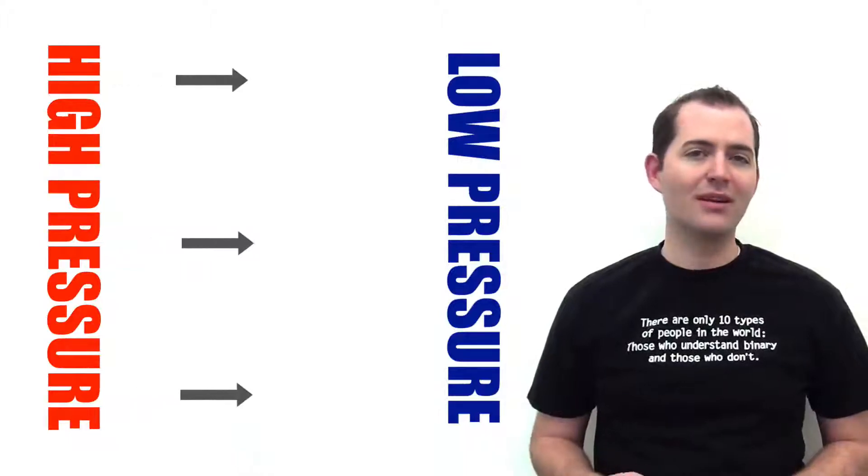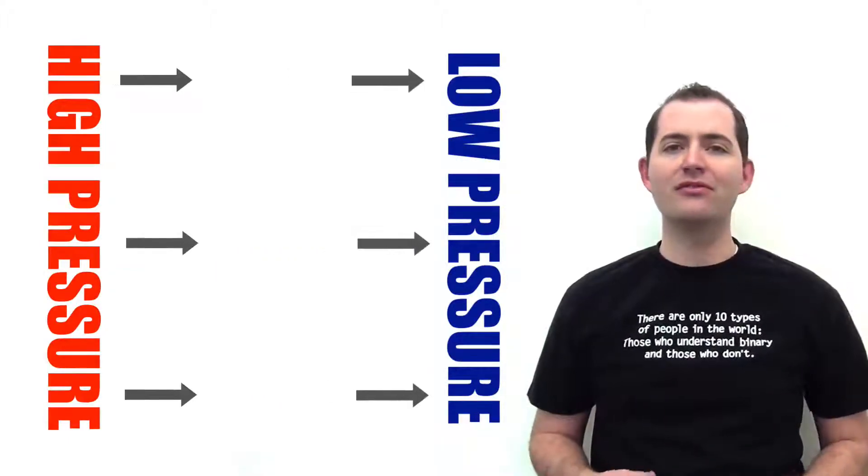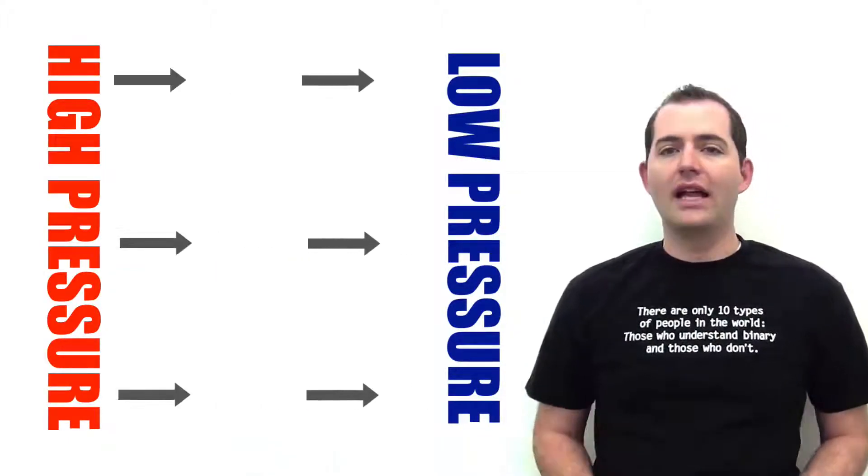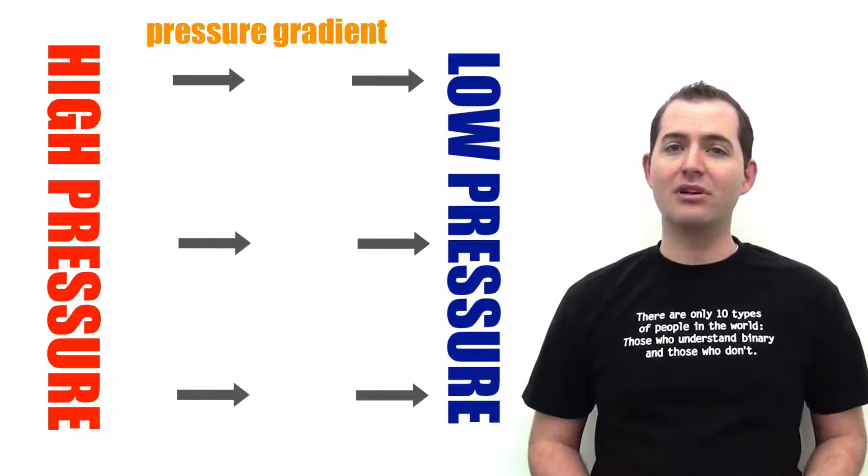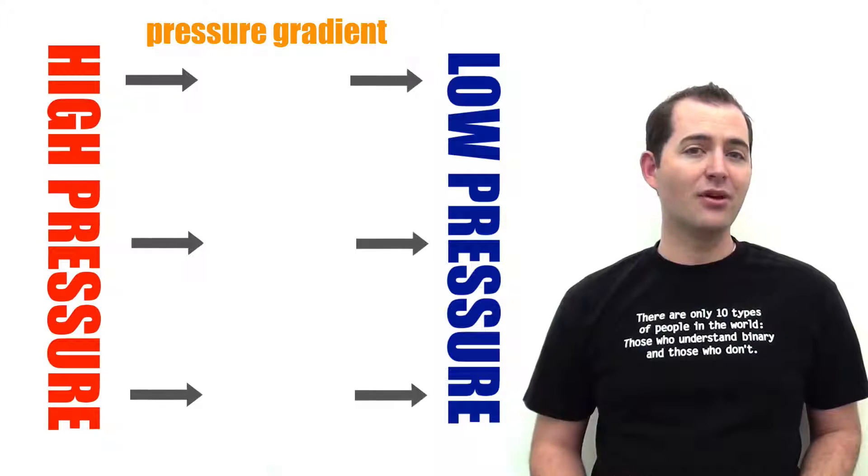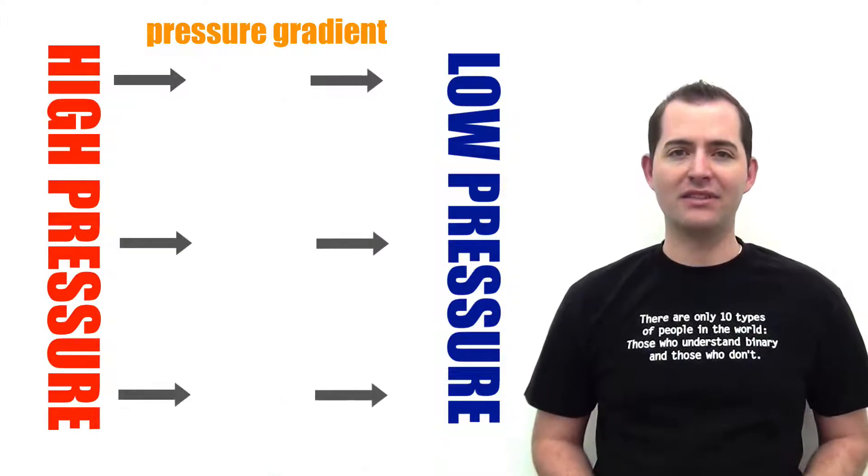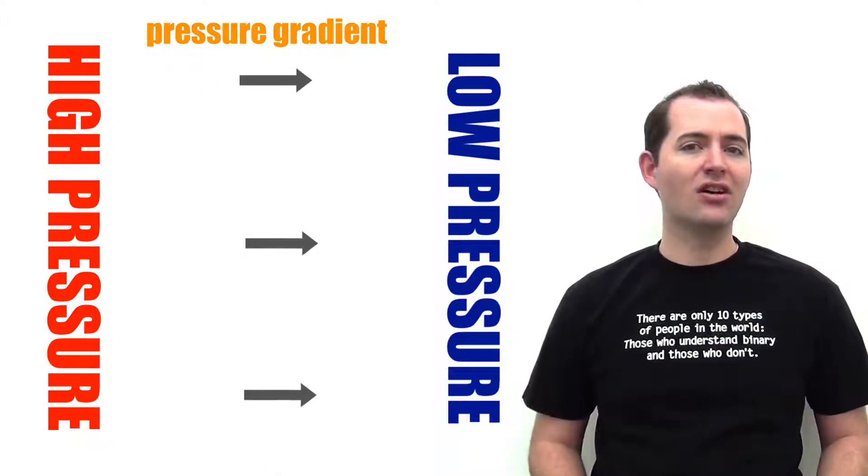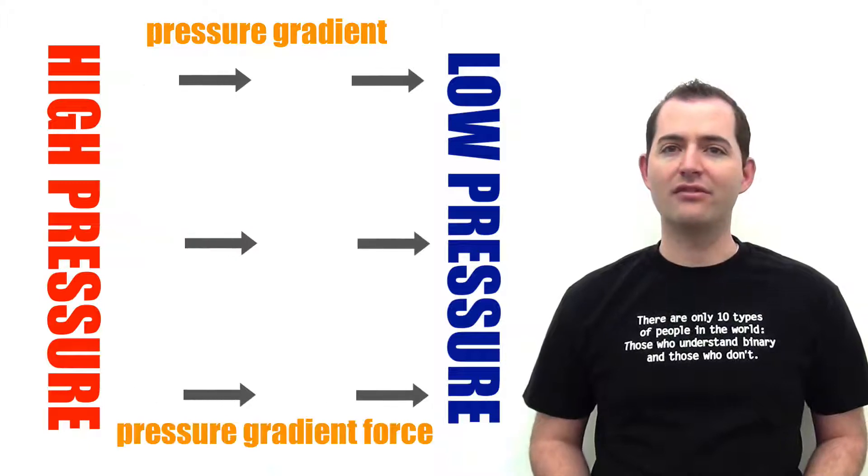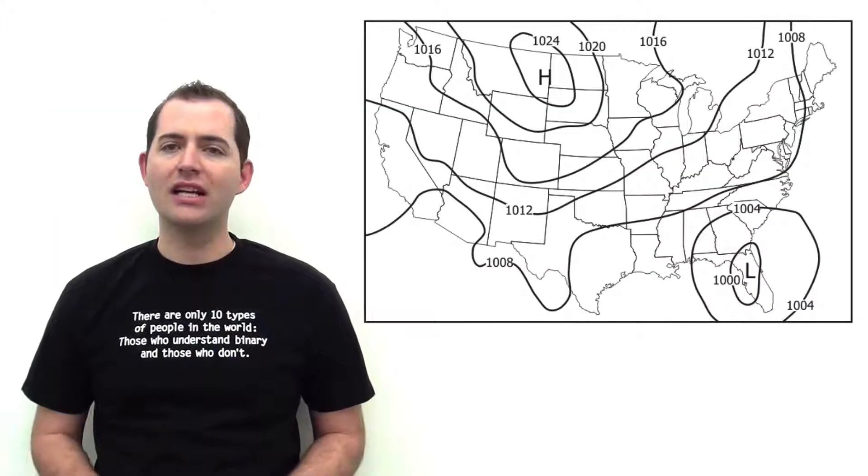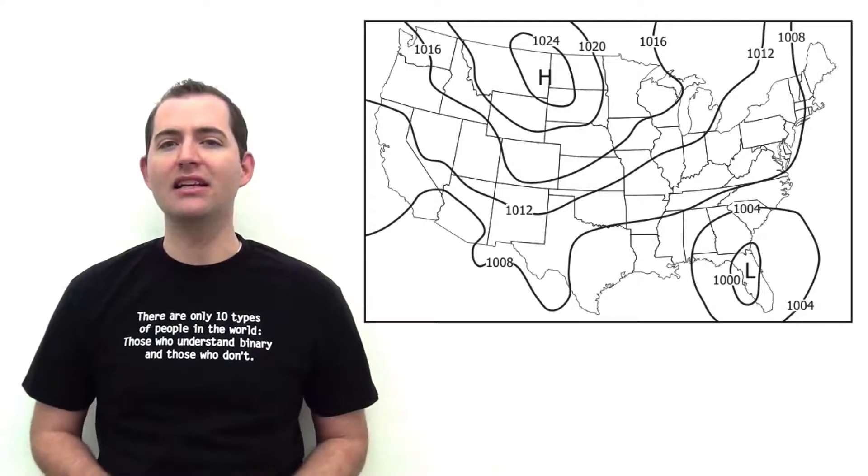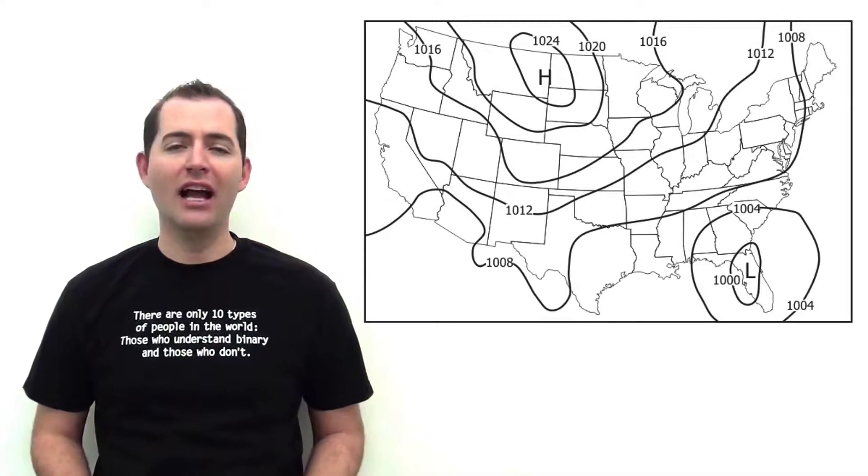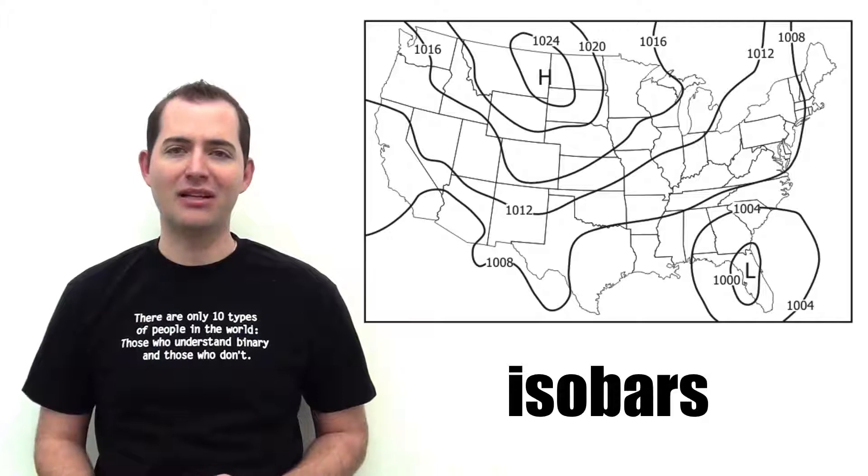Air moves horizontally when there is a difference in air pressure from one location to another. The change in air pressure over a distance is known as a pressure gradient, and the force created by these differences is called a pressure gradient force. Pressure in an area is commonly represented by lines connecting equal points of air pressure, known as isobars.